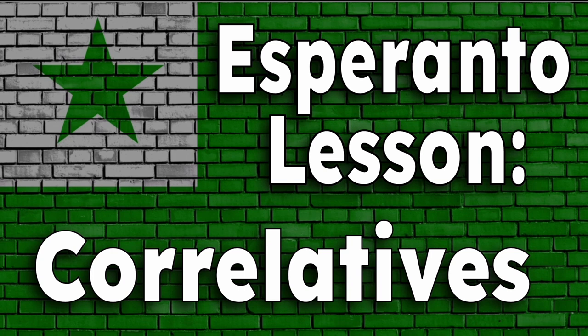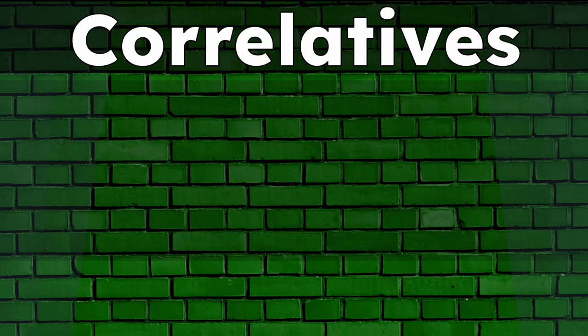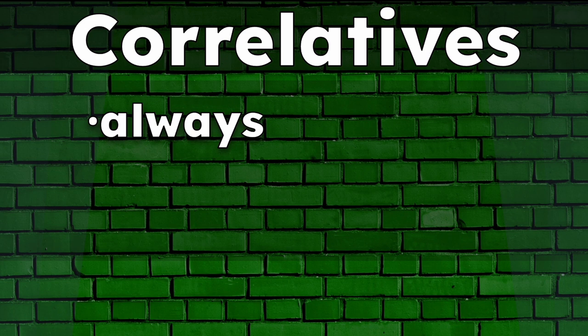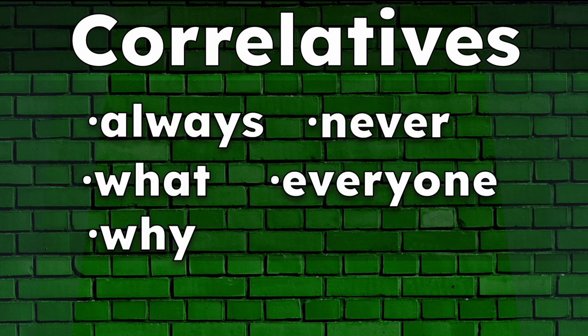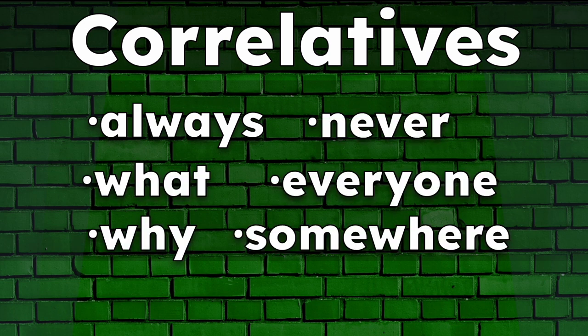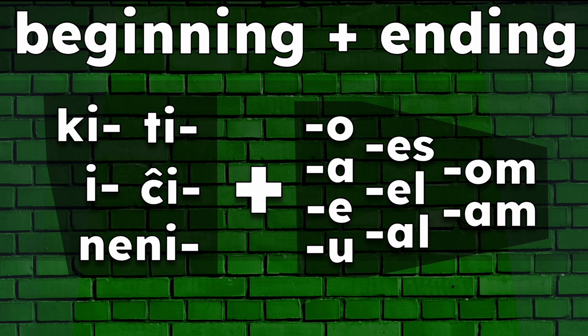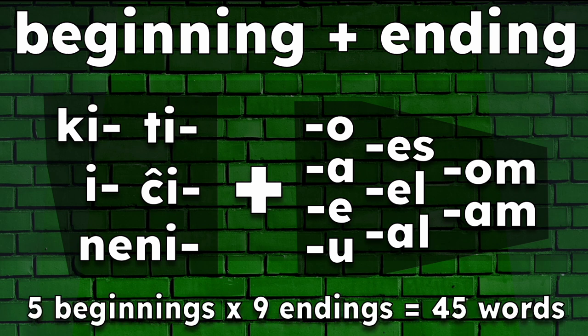In this lesson, we'll be learning about correlatives. These are frequently used words like always, never, what, everyone, why, somewhere, and many more. All correlatives follow a logical structure of a beginning plus an ending, with some variations including plurals and the accusative case. With five beginnings and nine endings, we have 45 basic correlative words.